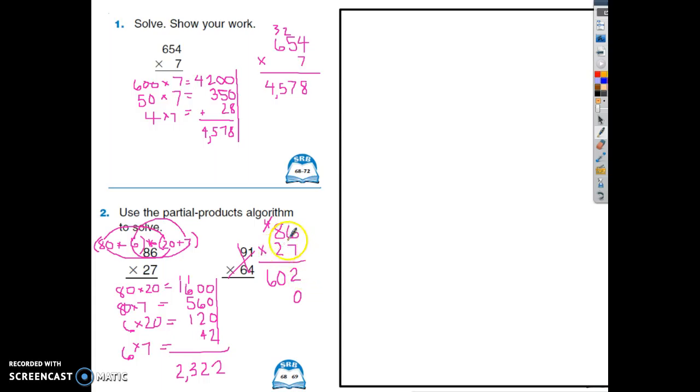2's turn. 2 times 6 is 12. Put your 2 down, carry 1 up here. 2 times 8 is 16, plus 1 more is 17. You can now add those up. We have 2, 2, 13, and 2. 2,322. Again, whatever method works best for you.